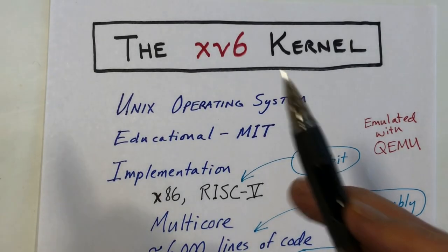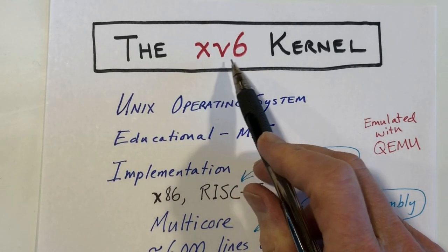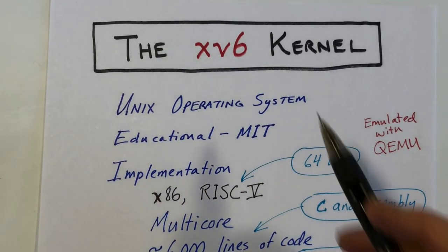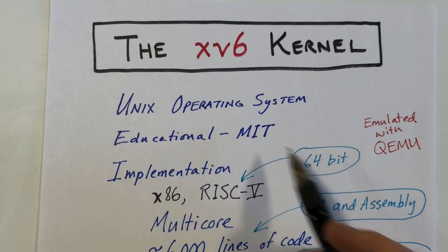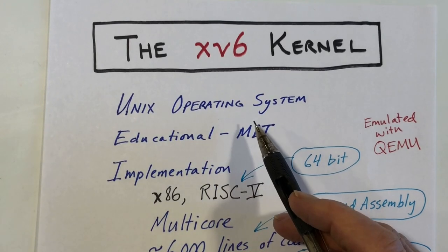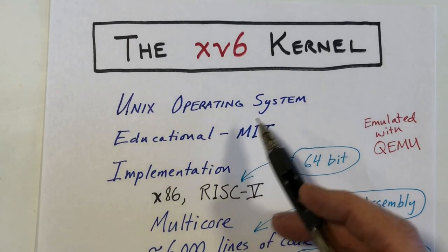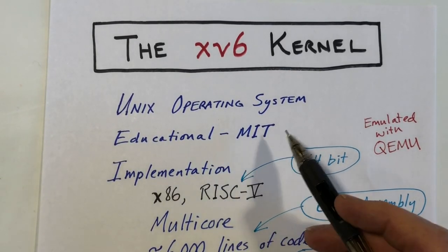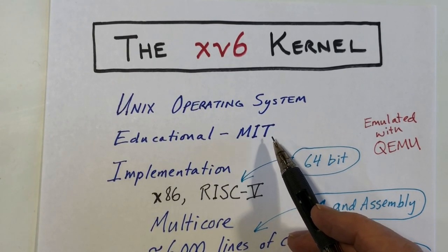This is the first in a series of videos on the XV6 operating system kernel. This is a very short but very sweet Unix-like operating system that's used for educational purposes. It was developed at MIT and used at other places as well.